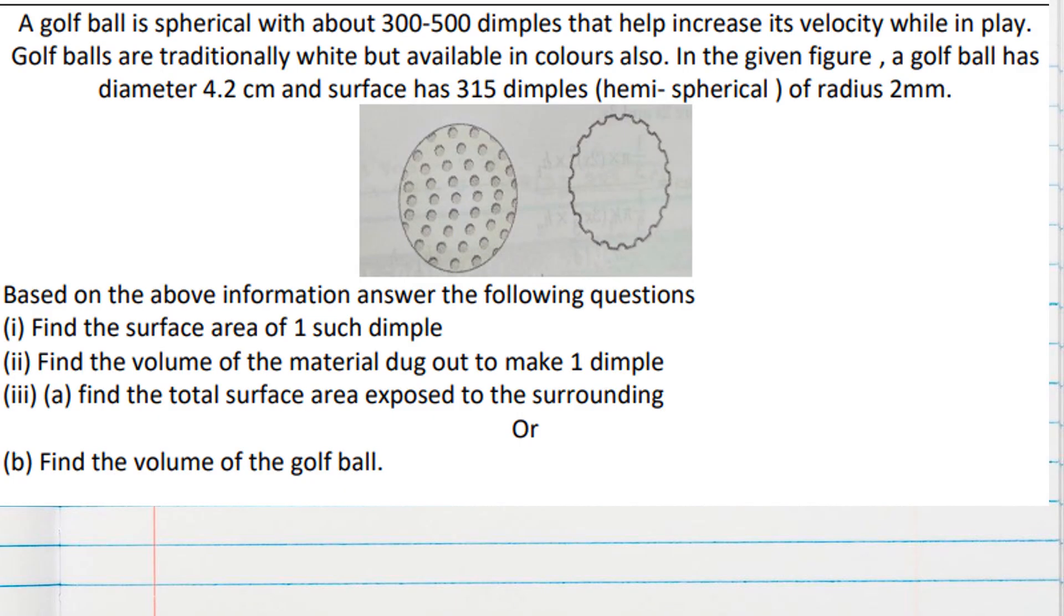Hello students, here is one of the common case studies we can find in many sample papers for the exam 24-25 class 10. The case study says a golf ball is spherical with about 300 to 500 dimples, and for us it is given the diameter of the ball is 4.2 cm and it has 315 dimples. You can see here clearly each dimple is hemispherical in shape.